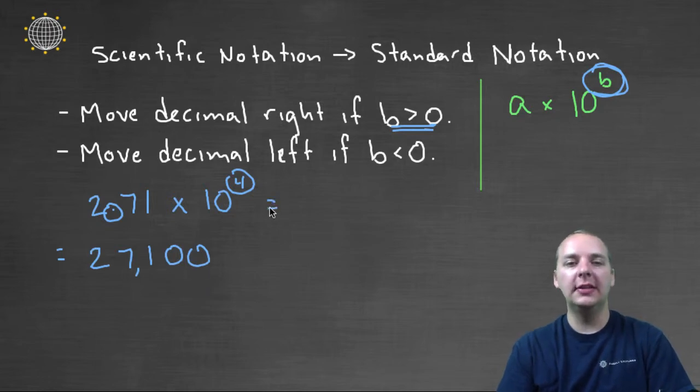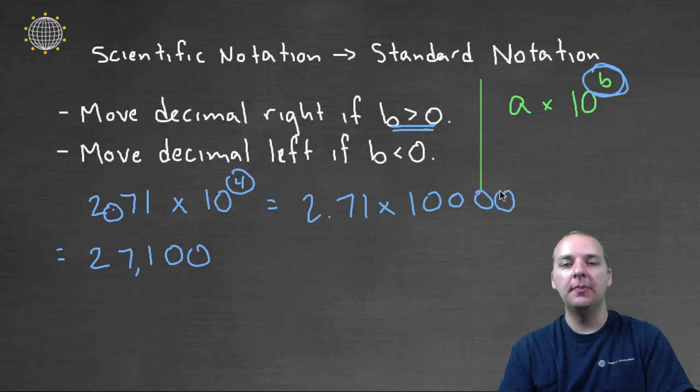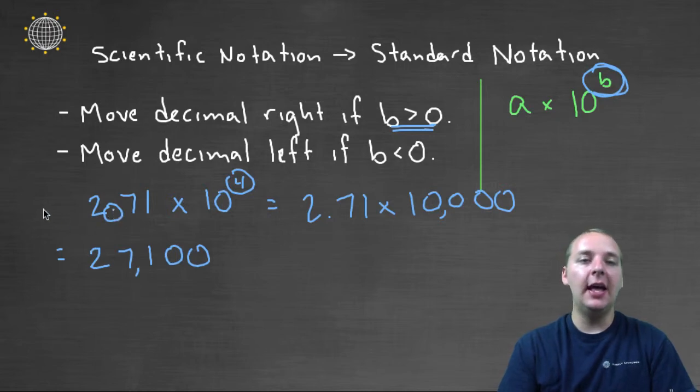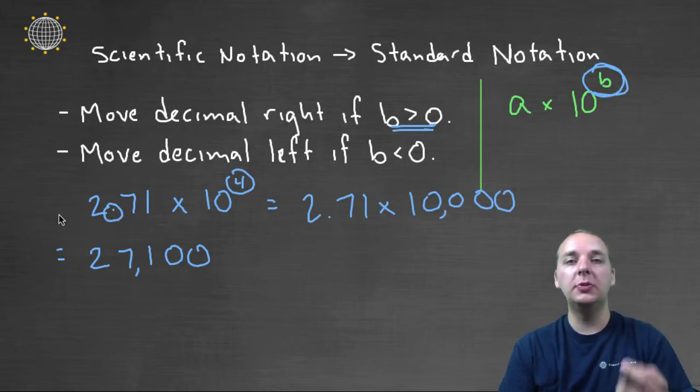And this makes perfectly good sense, if you wrote 10 to the fourth out long ways, 2.71 times a 1 with four zeros. So this would actually be the same as 2.71 times 10,000, which will make it 27,100. Now if the exponent b had been negative, we would have moved this decimal place left a certain number of units, and made the number much smaller.